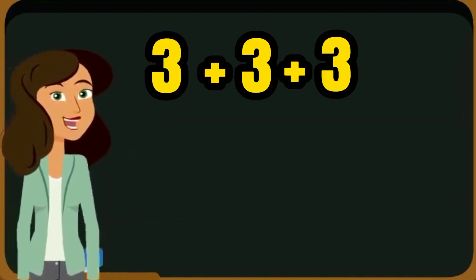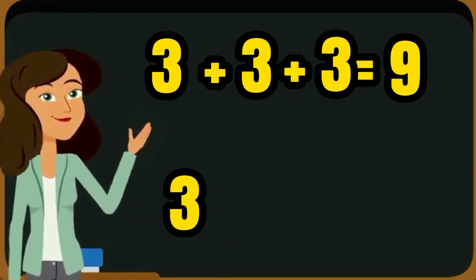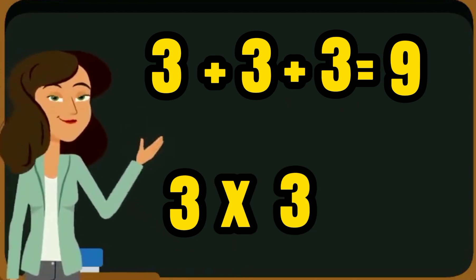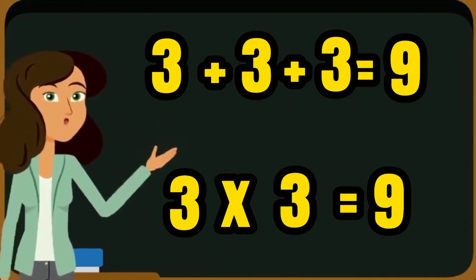Three plus three plus three is equal to nine, and three into three is equal to nine. Well done.